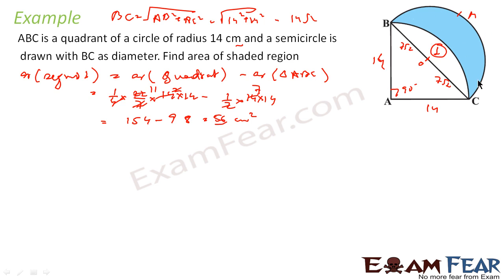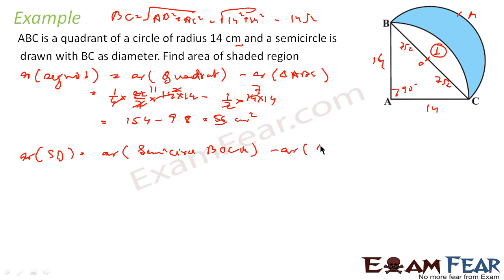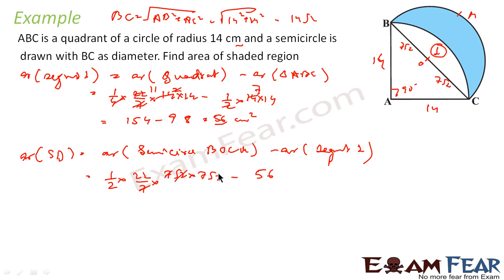Now I have the area of the segment. If I get the area of the whole semicircle and subtract the area of the segment, I get the area of the shaded region. Area of shaded region equals area of semicircle BOCM minus area of segment 1. Area of semicircle is 1/2 × (22/7) × (7 root 2)². Since 7 cancels and root 2 × root 2 = 2, this gives 154. Then 154 minus 56 = 98. Since we are talking about area in cm, the answer is 98 cm square.